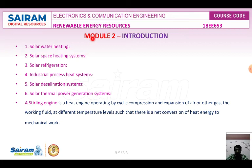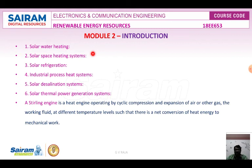Solar water heating systems include integrated collector storage systems, air systems, direct circulation systems, and indirect water heating systems. Solar space heating systems include both water and air systems for heating a specific space or compartment. Solar refrigeration systems include both adsorption and absorption processes. Industrial process heat systems include low-temperature applications — both air and water based — and solar steam generation.